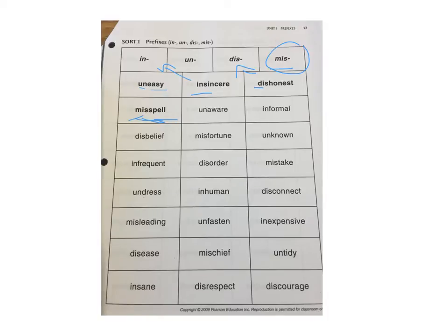So go ahead and you can look at these words. I'll read them to you and then just sort them into the columns in, un, dis, and mis. So you have uneasy, insincere, dishonest, misspell, unaware, informal, unknown, misfortune, disbelief, infrequent, disorder, mistake, disconnect, inhuman, undress, misleading, unfasten, inexpensive, untidy, mischief, disease, insane, disrespect, and discourage.